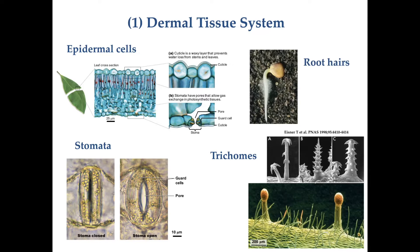Root hairs are another structure of the dermal tissue system, found in the tips of roots. They serve two functions: protecting the root tip as it pushes through soil, and harvesting water and minerals from the soil. It is through root hairs that water and minerals enter the plant body. These four cell types — dermal cells, guard cells, trichomes, and root hairs — make up the dermal tissue system.